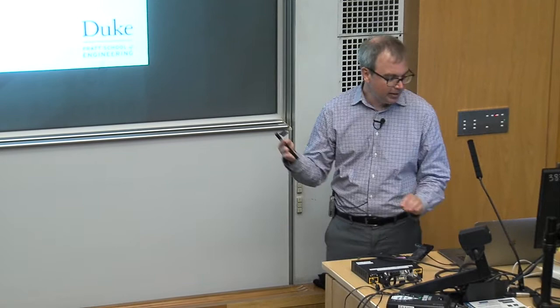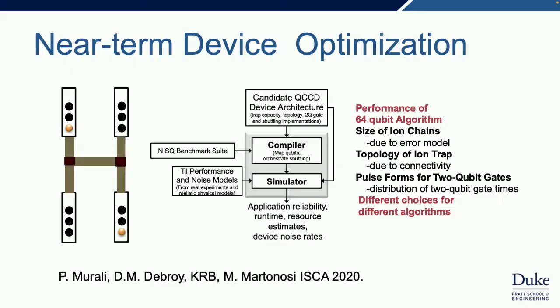What's great is some joint work with Margaret Martonosi, where her student Prakash and my student Tripto found that—obviously—optimal chain length depends on all kinds of things. What we found was the optimal chain length depends on our error model, the connectivity between different ion trap gates, and slightly different timing models based on pulse forms for two-qubit gates. The surprising thing to me was that different algorithms call for different choices. The basic reason has to do with the amount of parallelism available.